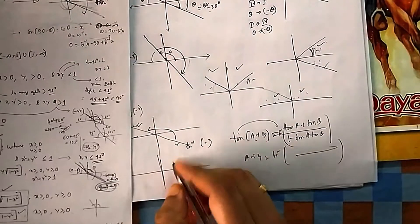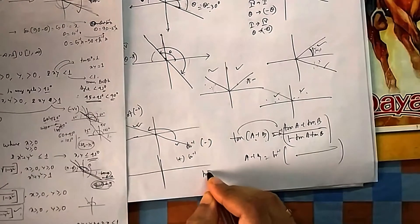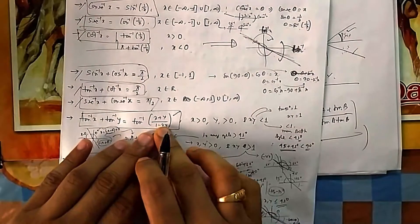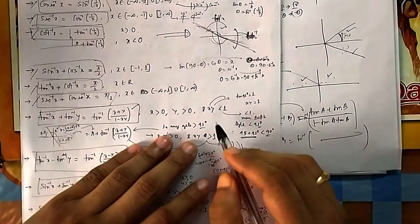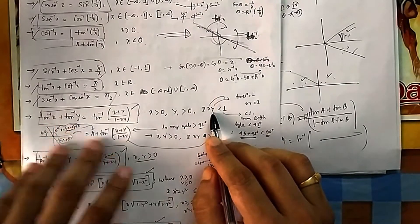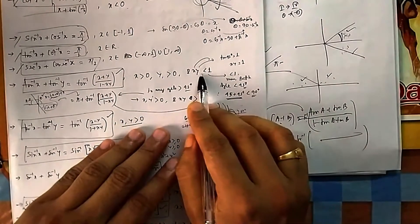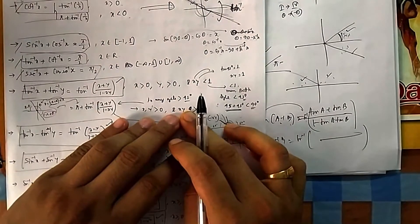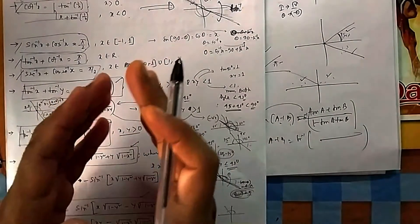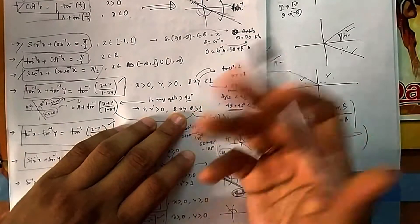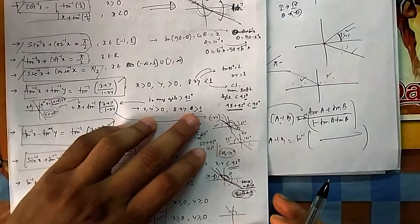You are adding two positive angles, but getting a negative answer. This is because both angles are greater than 45°. tan(45°) = 1, so below 45° the values are fractions and their product is less than 1. If both angles are above 45°, their product is greater than 1 — for example tan(60°)·tan(60°) = √3·√3 = 3.